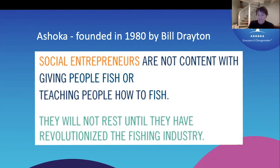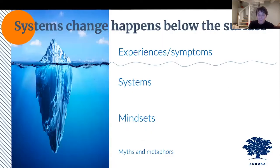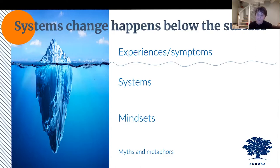Another way of looking at that is what we call through our iceberg model. If you have an iceberg, what you see on the surface are the symptoms, the experiences that people see every day — they're the symptoms of something deeper. What you can't see are the underlying systems and mindsets that have set the background framework for those experiences. And if you want to change society, you need to really address the systems and the mindsets if you're going to have long-term sustainable change for the good of everyone.